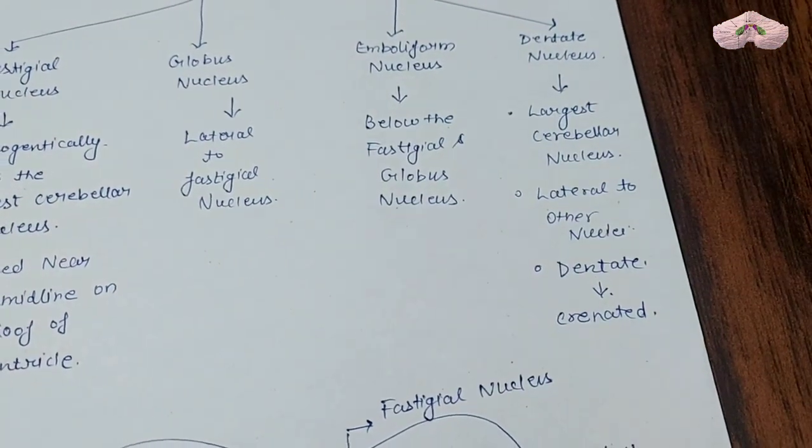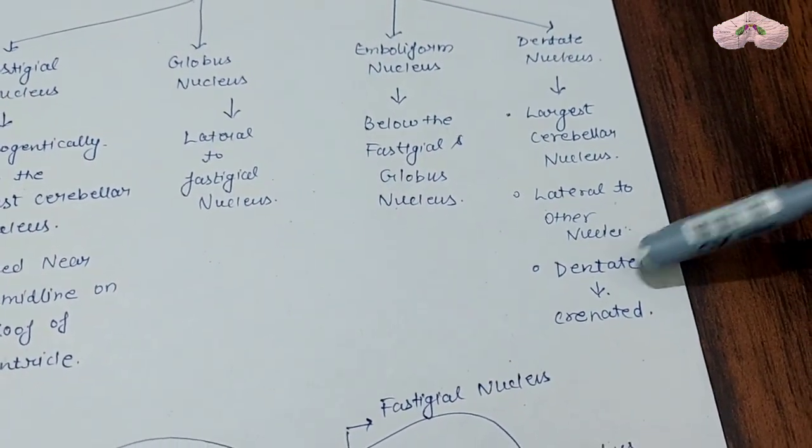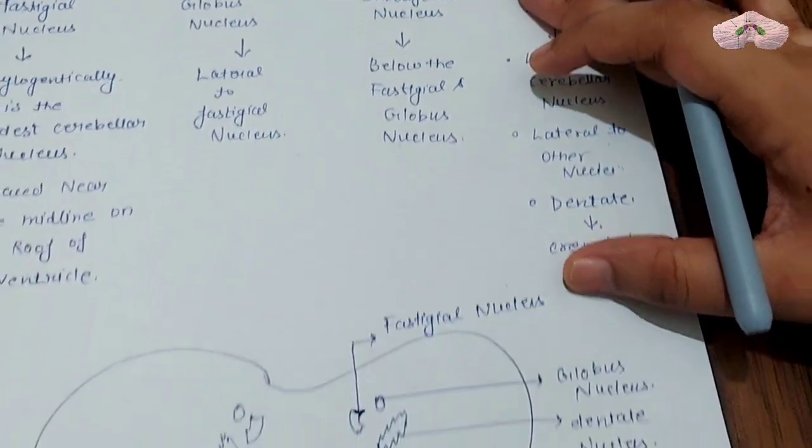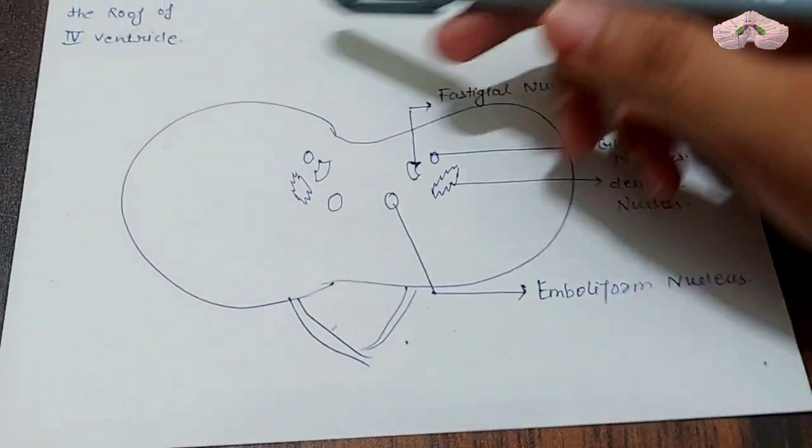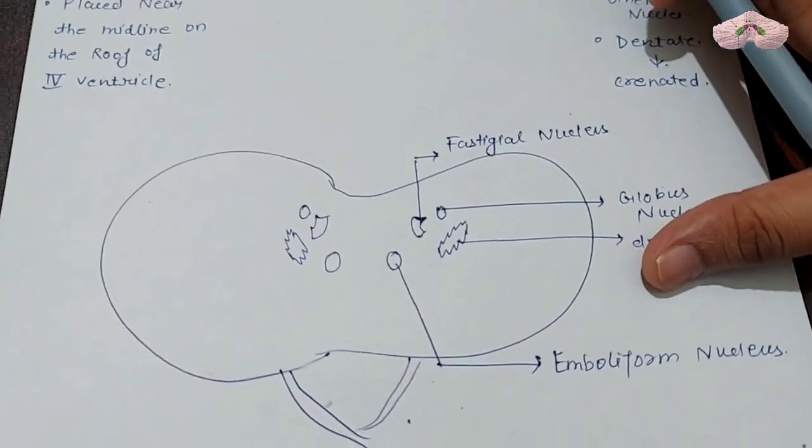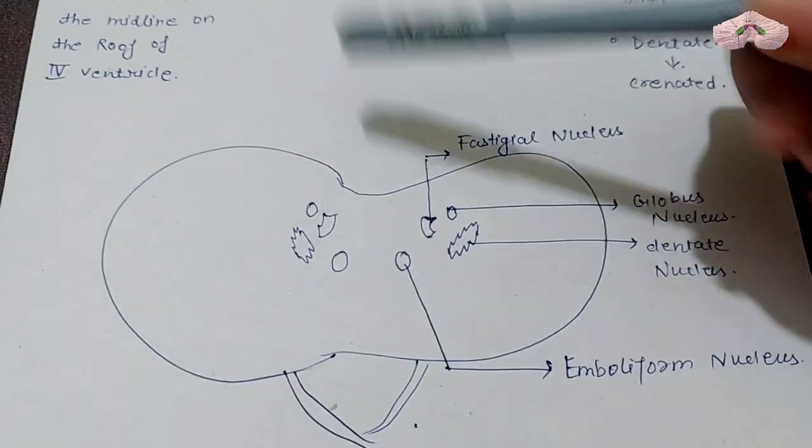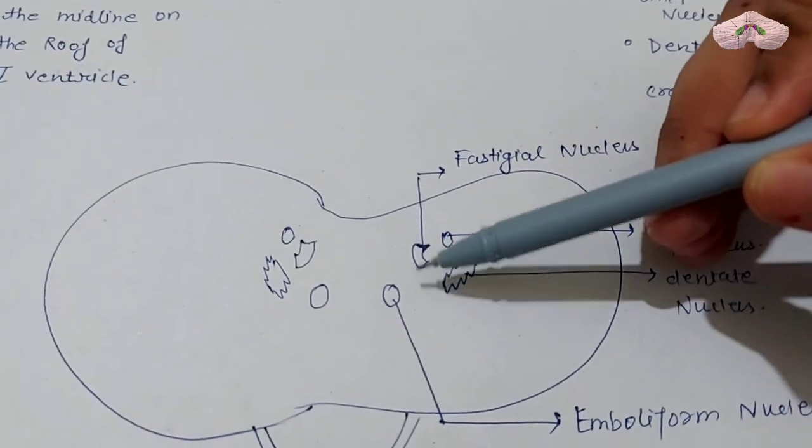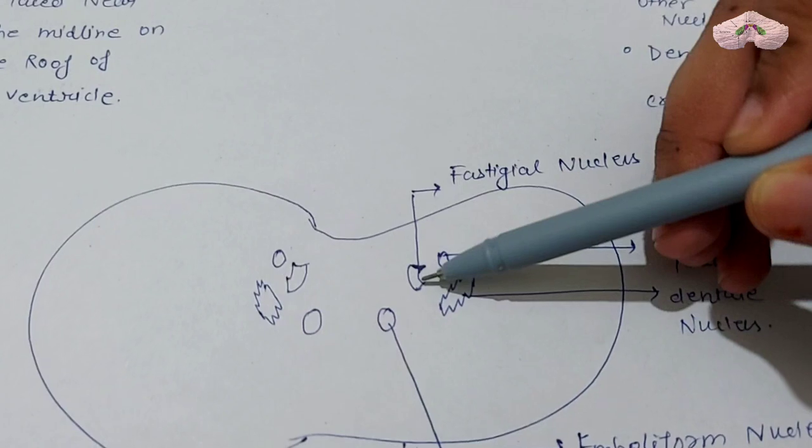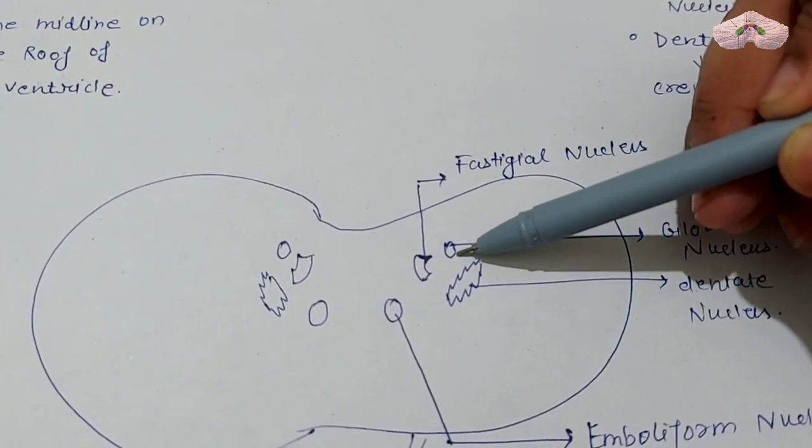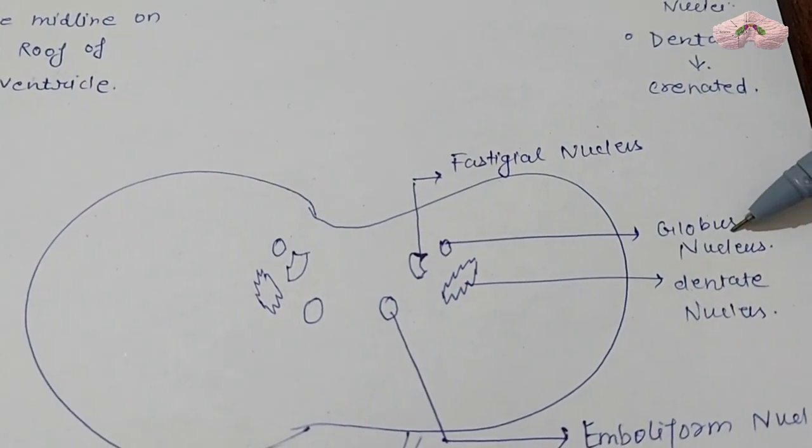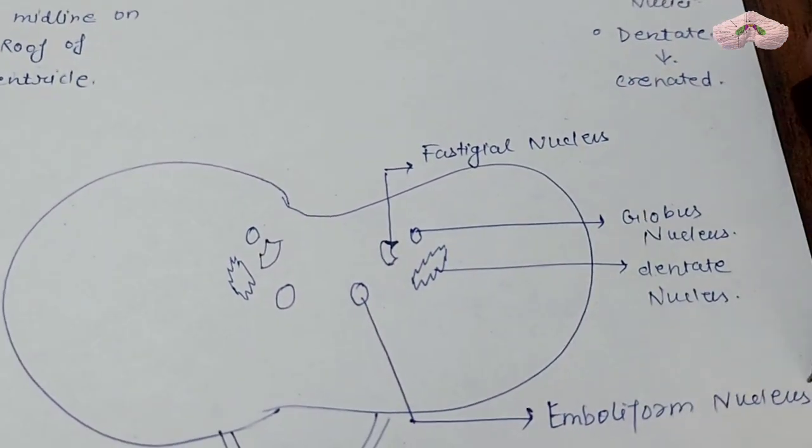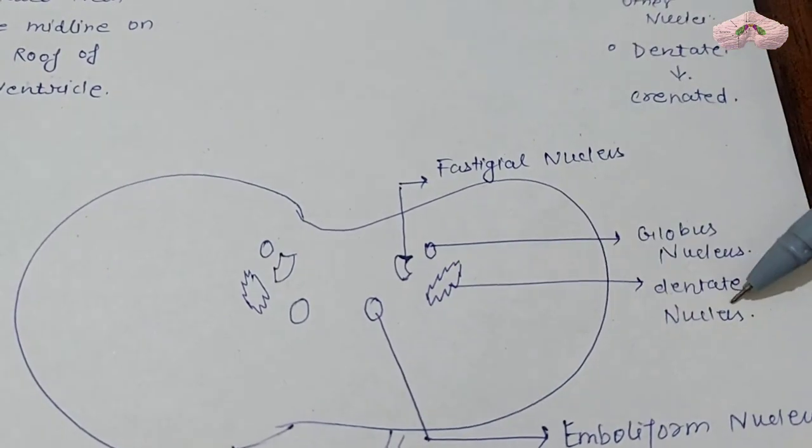Now look at this diagram. This is the cerebellum - my art is not very good, but you can see which one is the fastigial nucleus, which one is the globose nucleus, which one is the emboliform nucleus, and which one is the dentate nucleus.